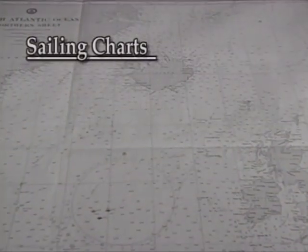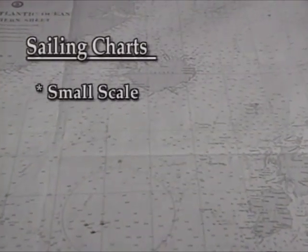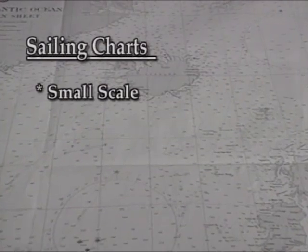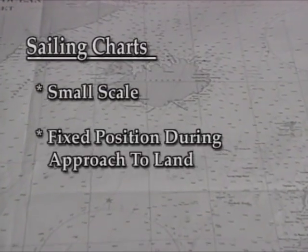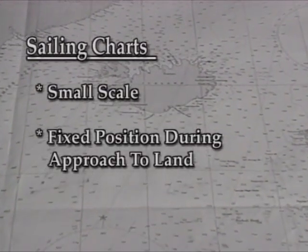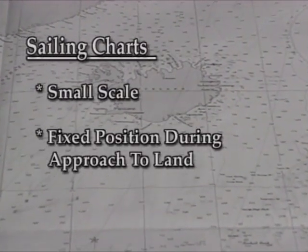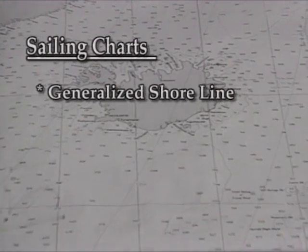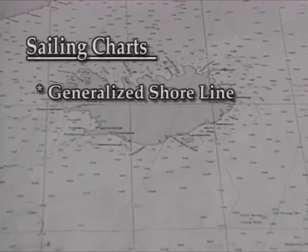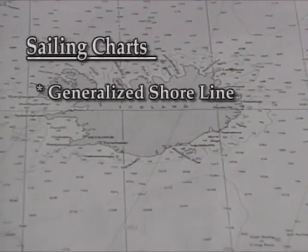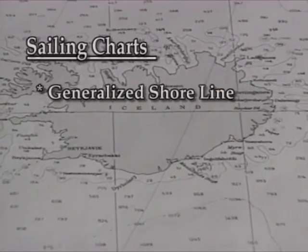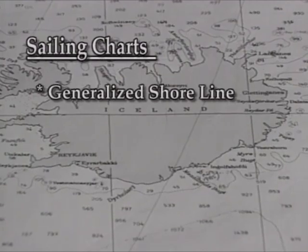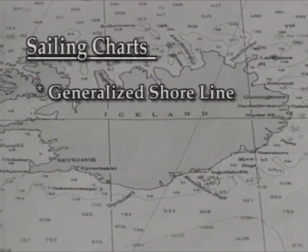Sailing charts use a small scale and show a large area. They are used to fix position during approaches to land. They only show generalized shoreline and topographic characteristics, and also depict offshore soundings.